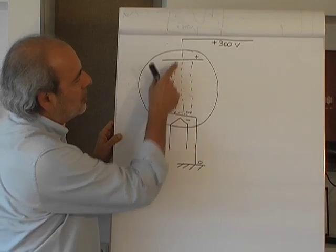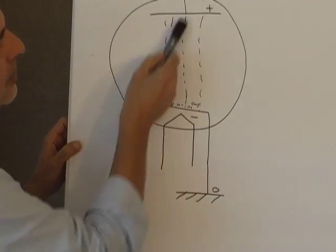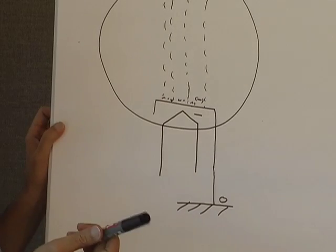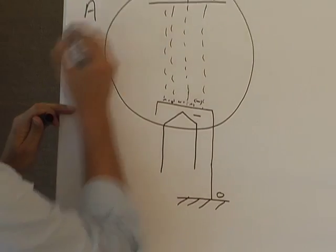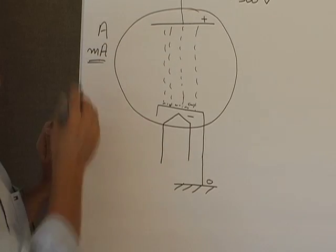Under these conditions, we obtain an electrical current expressed in amps, or milliamps in the case of the vacuum tube.